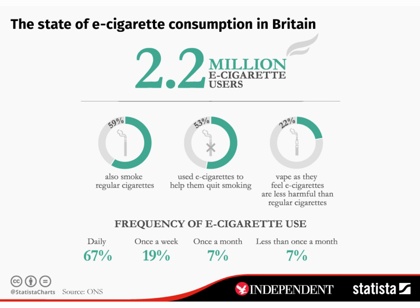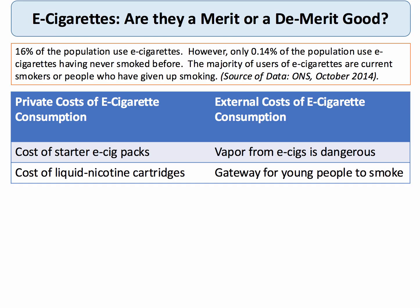ONS data shows there are over 2 million e-cigarette users in the UK. Approximately 67% vape every day and about one in five once a week. A high percentage vape because they feel e-cigarettes are less harmful than regular cigarettes, and about 53% are using e-cigarettes to help them quit smoking. There are private costs to the consumer: the cost of buying e-cig packs and liquid nicotine cartridges.